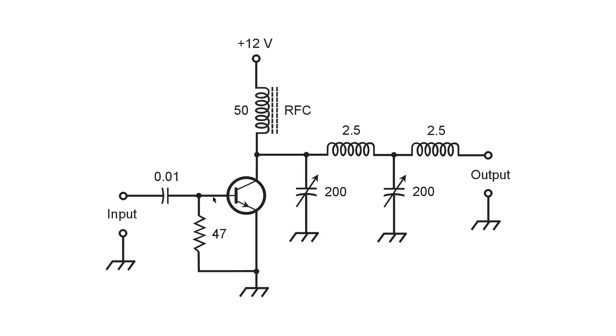Component values, by the way, for capacitors are in microfarads if less than one, that's this one right here, and in picofarads if more than one, that's those two variable capacitors here. 200 picofarads representing the maximum value of each variable capacitor. Inductances are in microhenries, 2.5, 2.5, and 50.